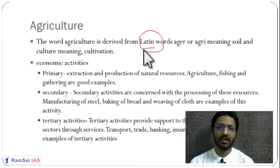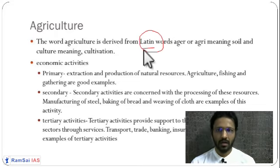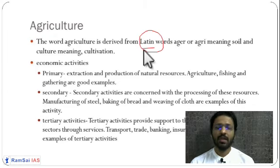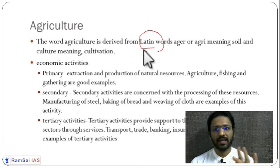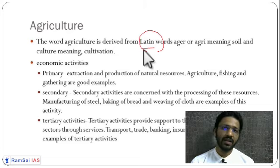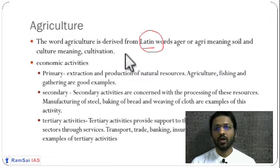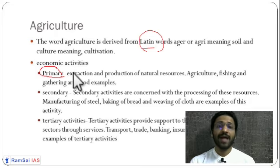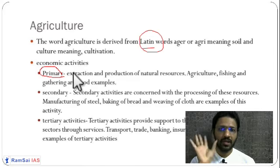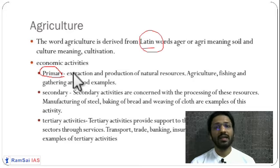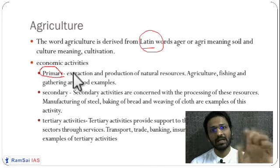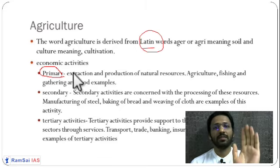As you go to the Class 12 NCERT, you will see more activities like quaternary and quinary activities. But in this NCERT we are going to concentrate only on three activities — primary, secondary, and tertiary — and specifically in this chapter we will concentrate only on the primary activities. Primary activities deal directly with nature, so agriculture is a primary activity.